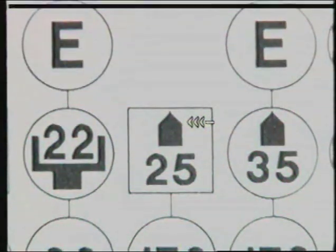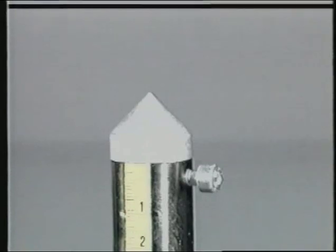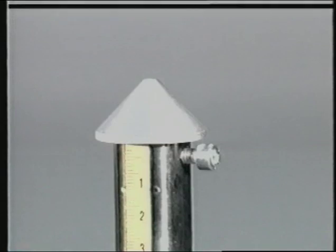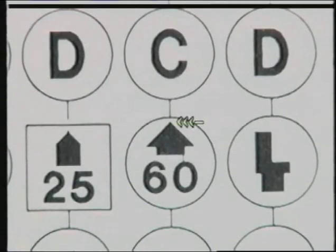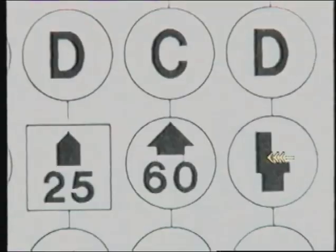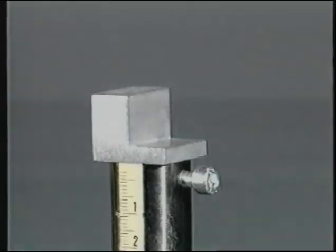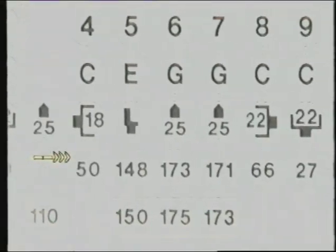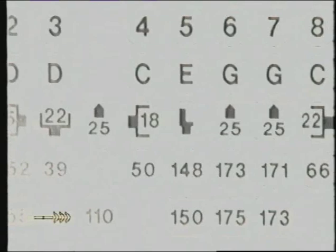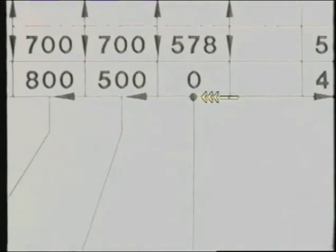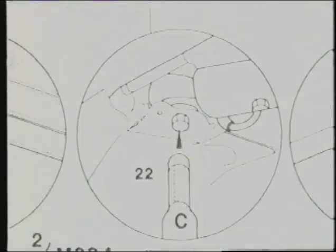Measuring stud 25 millimeters, 35 millimeters, 60 millimeters. Angle stud. Height dimension. Height dimension with engine removed. Zero point length measuring — explanatory drawing for zero point is always shown.